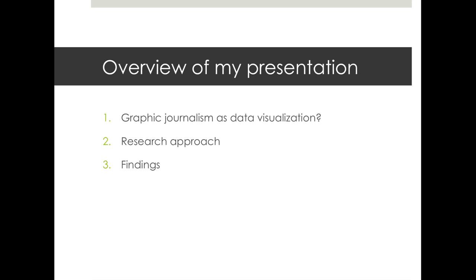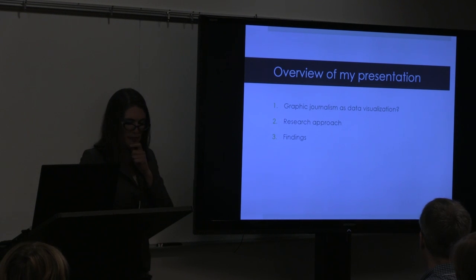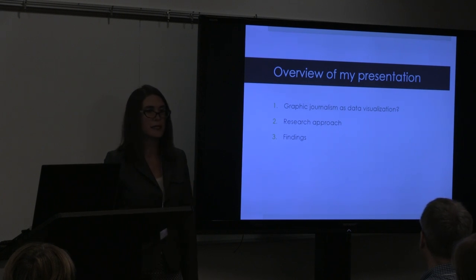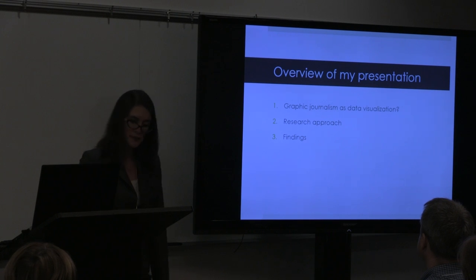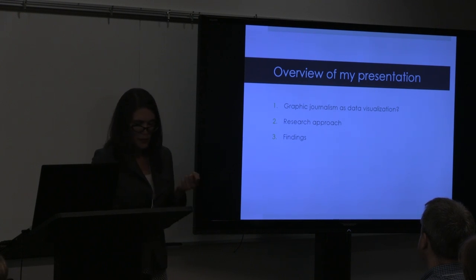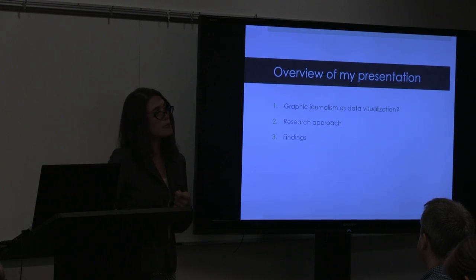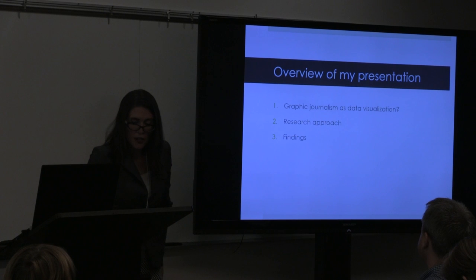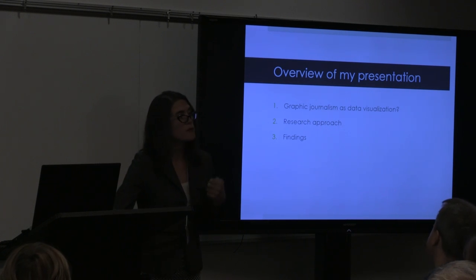I'm going to present this paper in three parts. I'll begin by introducing graphic journalism and comparing this emergent visual form to some of the strategies more commonly used in journalism to visualize data. In the second part, I'll discuss the approach I used in my research, which involved producing an original work of graphic reportage drawing on official statistics on displacement in Haiti after the 2010 earthquake. I'll conclude by presenting key findings, showing that working in this form allowed me to communicate not only data on displacement in Haiti, but also critical context about how and why displaced Haitians were counted, and to explore the perspectives of people whose data were being collected.